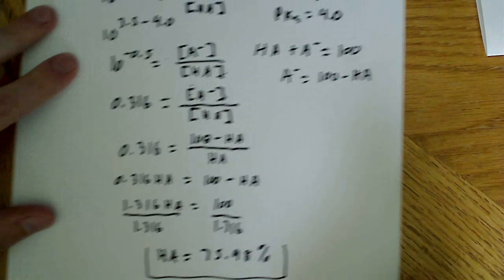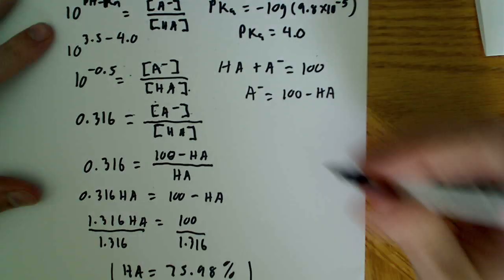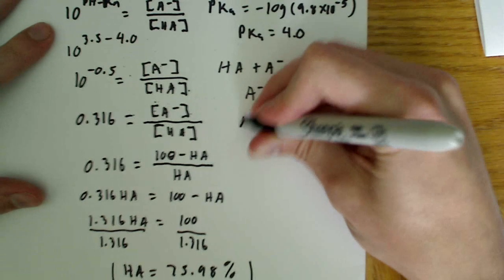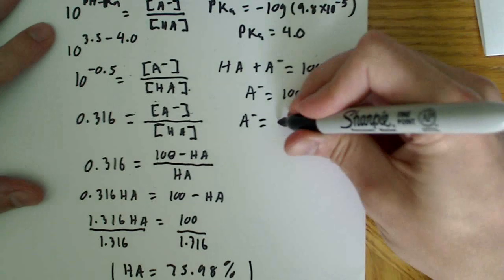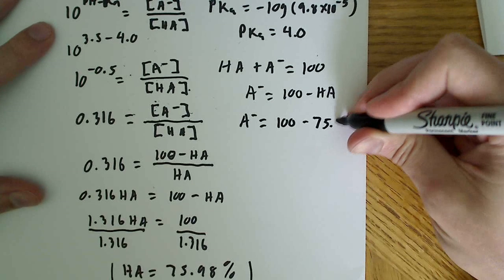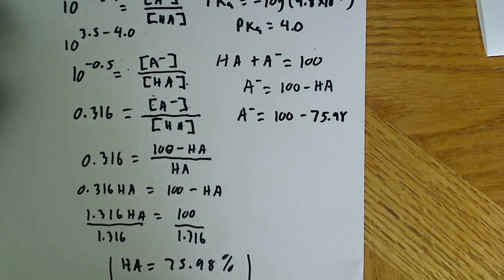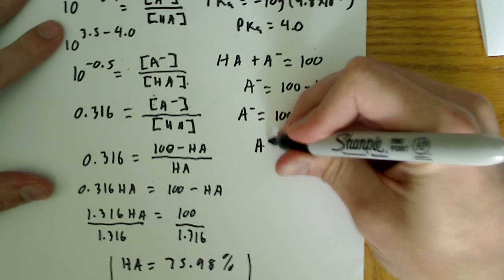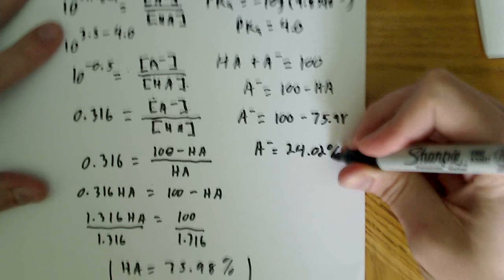Now, in order to get the percentage of deprotonated barbituric, that's just going to be plugging into this equation. So, the percentage of deprotonated barbituric is equal to 100 minus the 75.98 that we got from the protonated form. And that gives us roughly 24.02%.